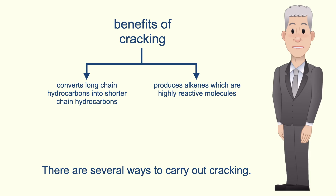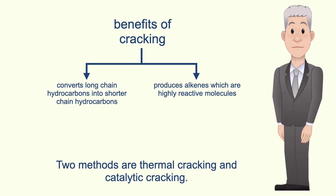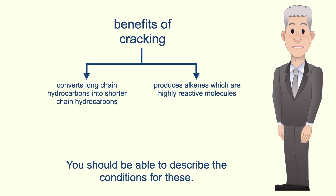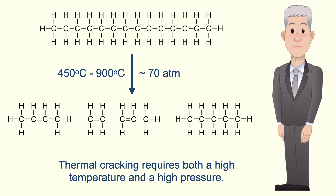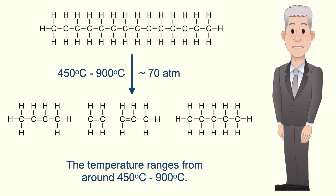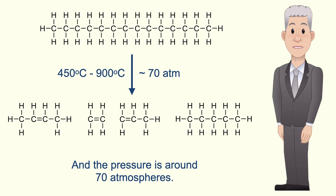There are several ways to carry out cracking. Two methods are thermal cracking and catalytic cracking, and you should be able to describe the conditions for these. Thermal cracking requires both a high temperature and a high pressure. The temperature ranges from around 450 degrees Celsius to 900 degrees Celsius, and the pressure is around 70 atmospheres.